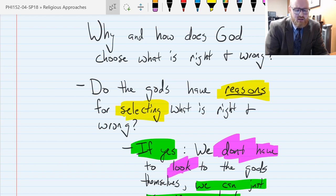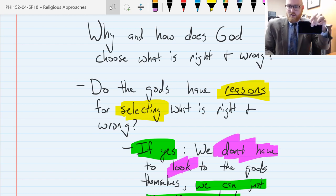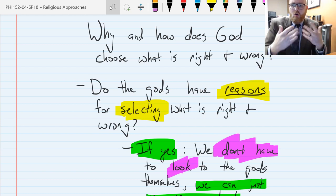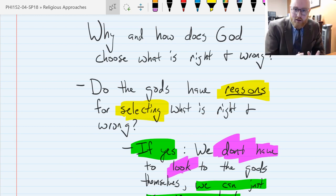Plato phrases this somewhat awkwardly whenever he writes and has Socrates saying, why is a given thing being carried? Is it because it's worthy of being carried? And that's why I have chosen to carry this? Or is it just because it is being carried? Is that the reason why it is carried? And so you might say, what, who cares? What does that mean? What does that matter? You might have a host of questions. It is awkwardly phrased. But another way of saying it is, why do the gods love what they love? That's really what he's trying to get at.